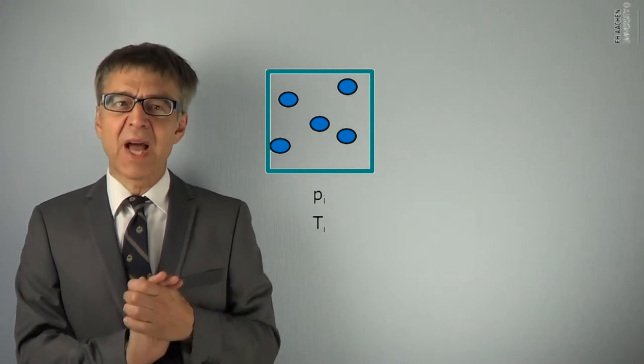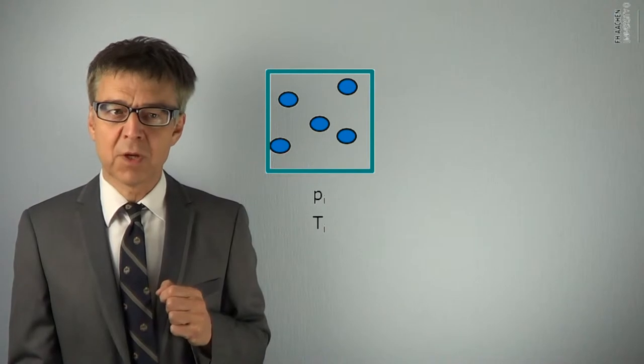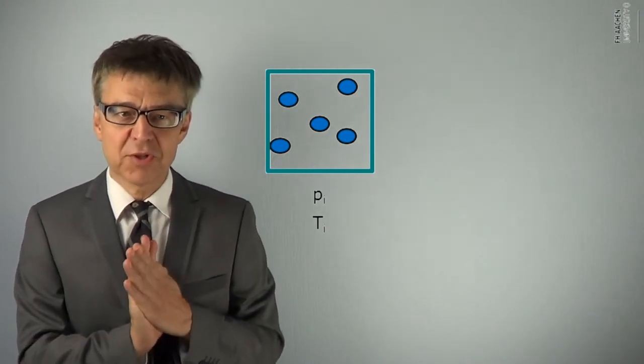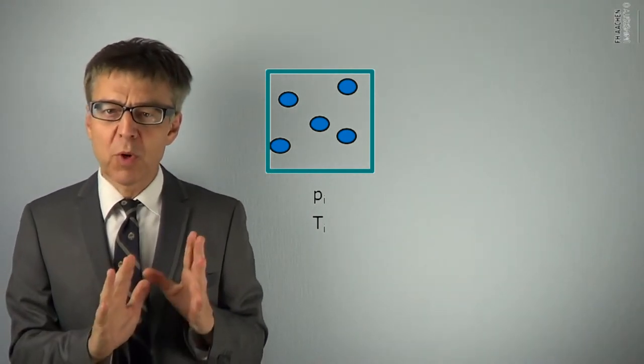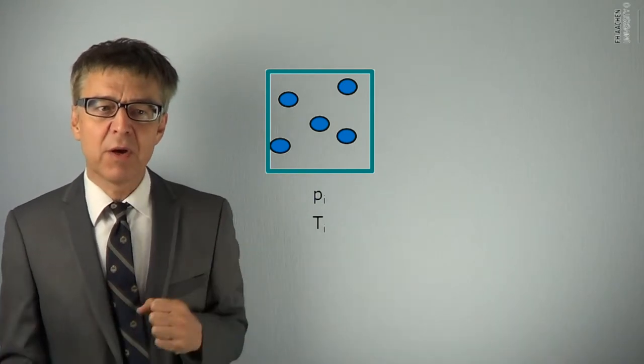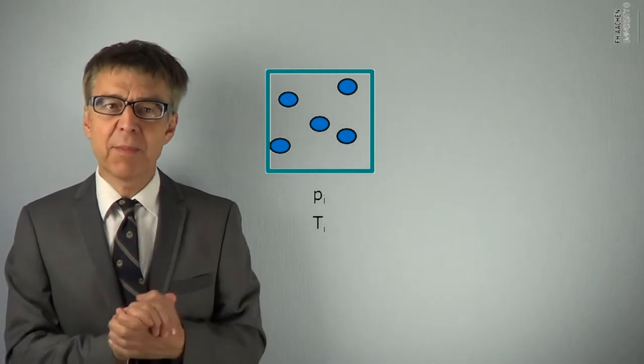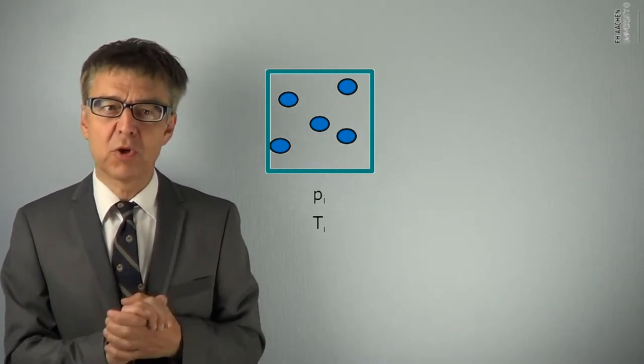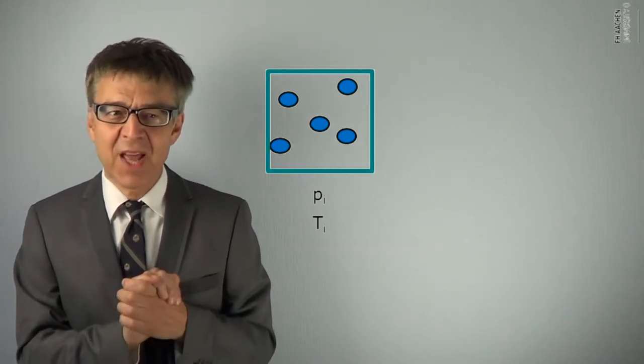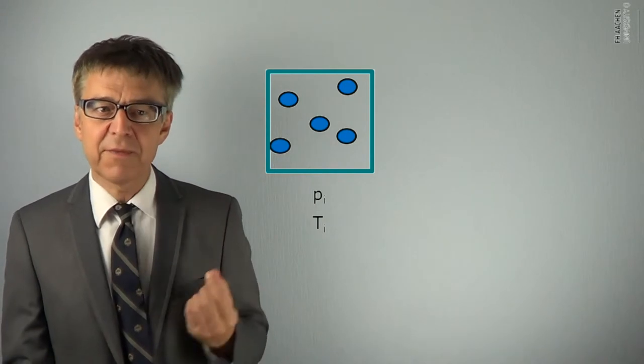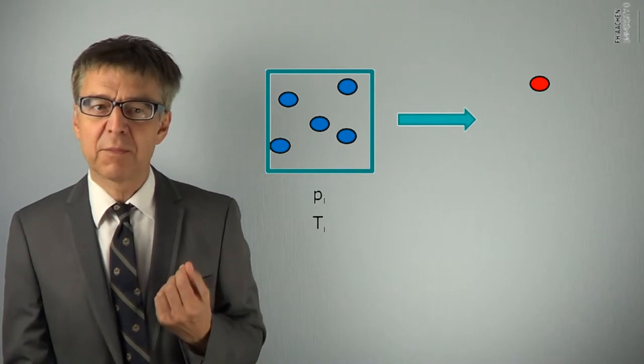The subscript i refers to these variables in the initial state. So we start with a single phase, single component system, clearly defined by pressure and temperature. Now we want to change the state by varying one or more state variables. For example, we can heat up the system at constant volume to a certain extent. Just imagine a tin can on a hot plate. Then we get a different temperature and a different pressure. Tf for T final and Pf for pressure final.